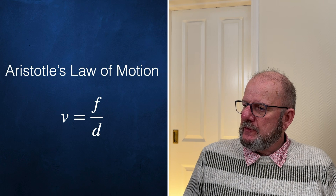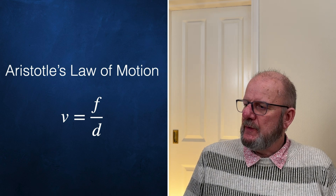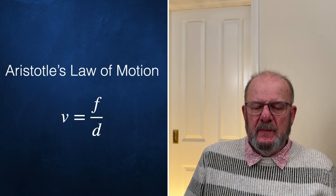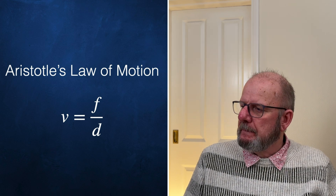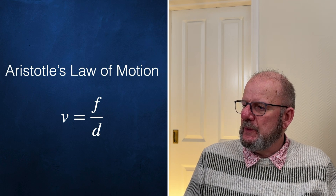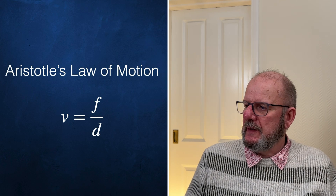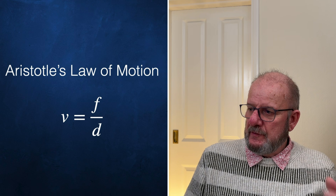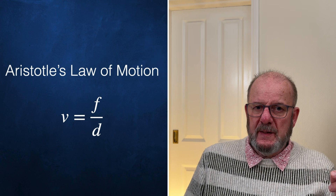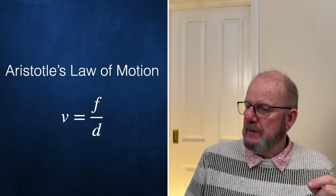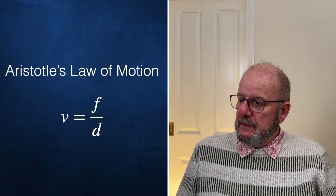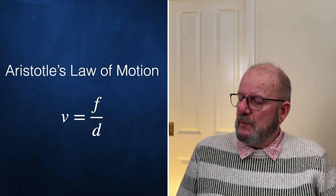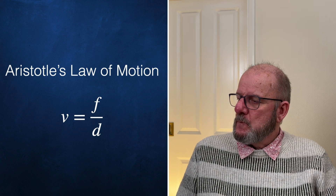The situation Aristotle is describing is like this. Imagine you throw a stone into air with some force F. The air has some density D — you know the air has some density because you can feel the wind. When you throw the stone it moves at some speed proportional to the force: the harder you throw it the faster it goes, and inversely proportional to the density of the medium. Air has a very low density so the stone isn't slowed down much. If the stone goes into water, water has a much higher density and the stone is slowed down a lot. Aristotle's law of motion is wrong, but it survived into the 17th century — about 2,000 years. That's a pretty good run.